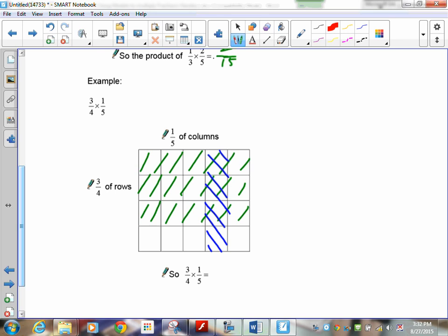There's one out of five columns. Now how much is doubled up right here? So I've got one, two, three out of—and there are twenty squares there—so three over four times one over five is three-twentieths. I'm right. Okay, go down to the next page.